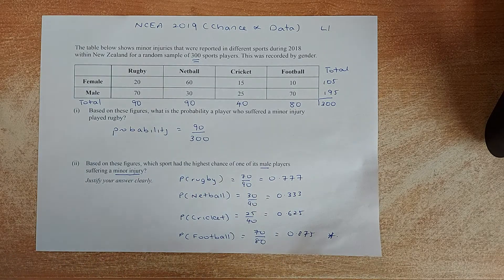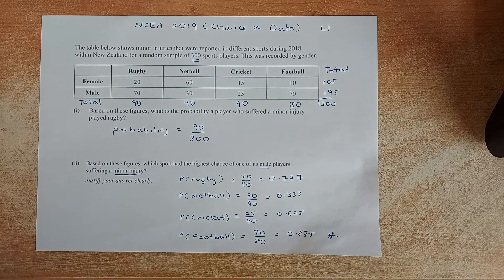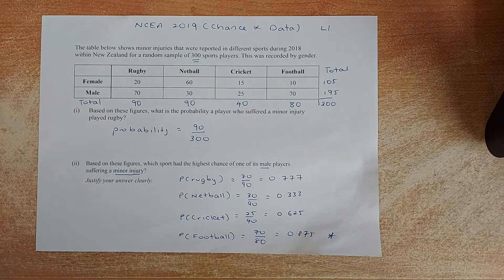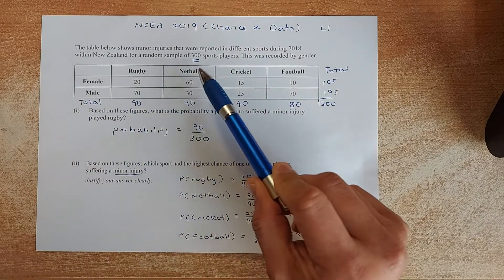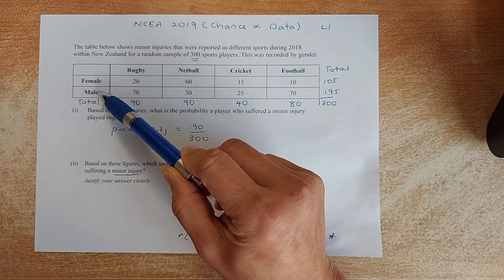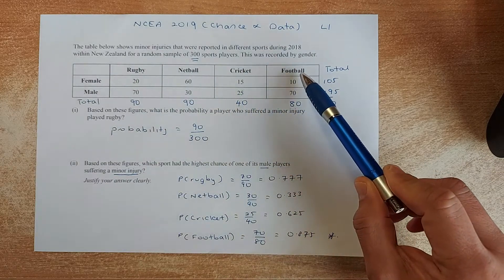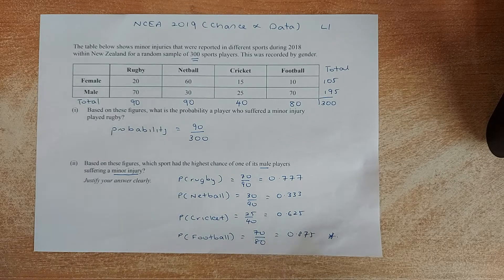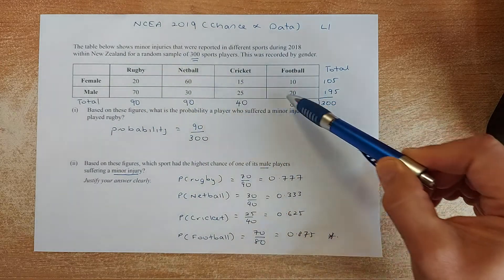The first question is from the 2019 NCEA chance and data level 1 exam. The table shows minor injuries that were reported in different sports during 2018 within New Zealand for a random sample of 300 sports players. This was recorded by gender, so male and female. And there are 3 sports: rugby, netball, cricket and football. So this is a 2x2 contingency table.